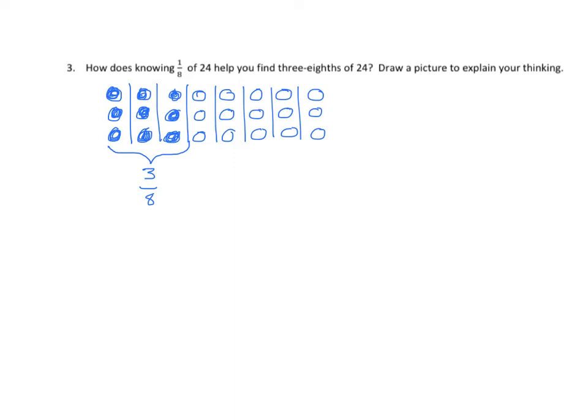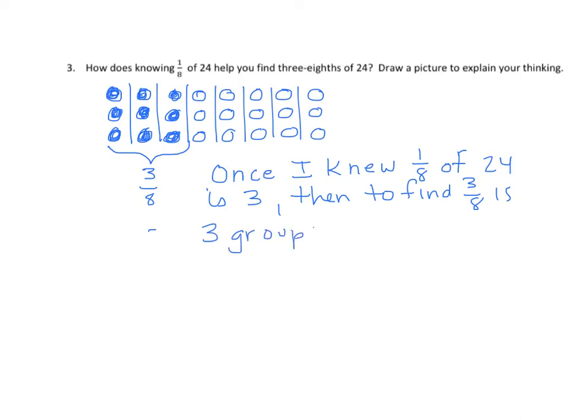Well, we need to make an explanation. It's like once I knew one-eighth of 24 is 3, then to find three-eighths is 3 groups. Three-eighths of 24 equals 9. Therefore, three-eighths of 24 equals 9.